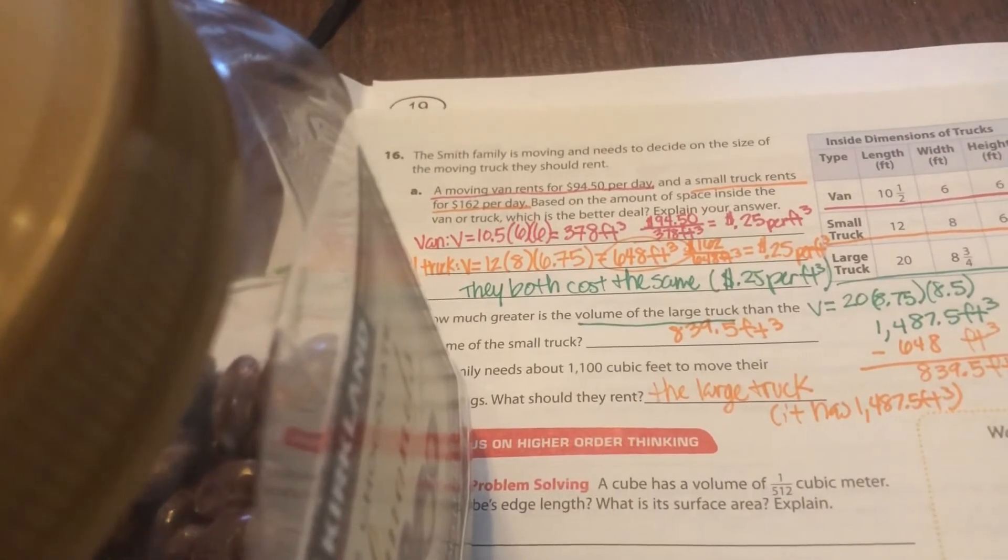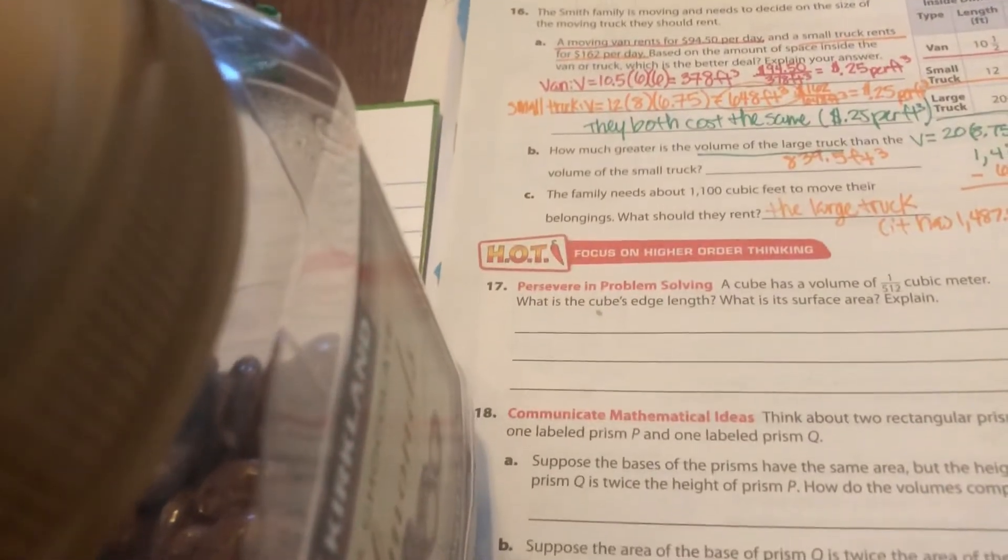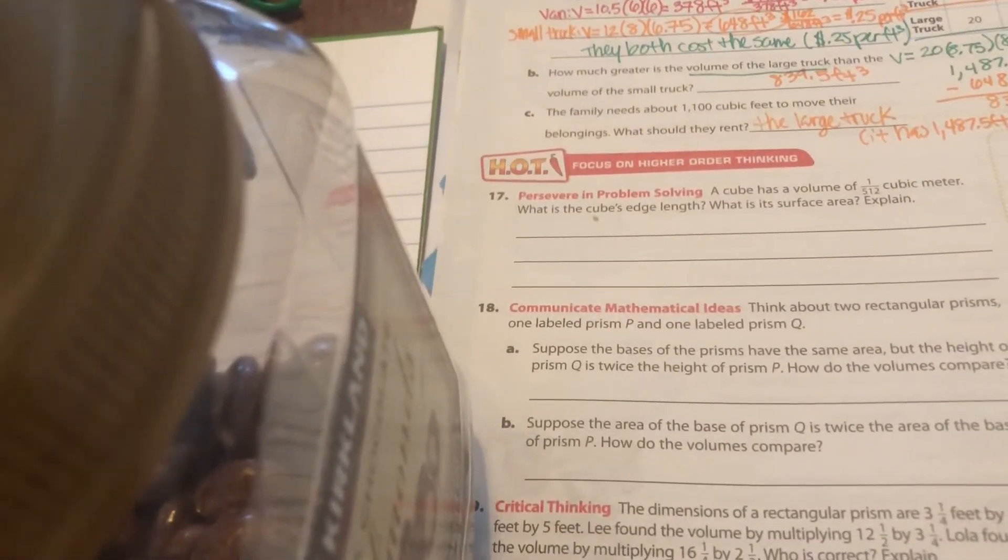Why? Because it has 1,487.5 cubic feet of space inside. And so then they can fit all their belongings in one trip. If you got all those right, smarty pants, feel proud. Okay. The other question we want to do is question 18.